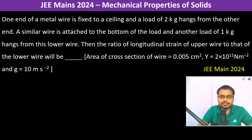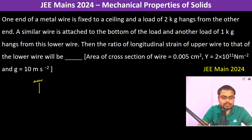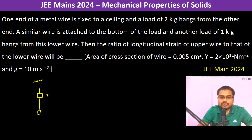One end of a metal wire is fixed to a ceiling and a load of 2 kg is hanging from it. A similar wire is attached to the bottom of the load, and another wire of 1 kg is hanging from it. We need to find the ratio of longitudinal strain of the upper wire to that of the lower wire.